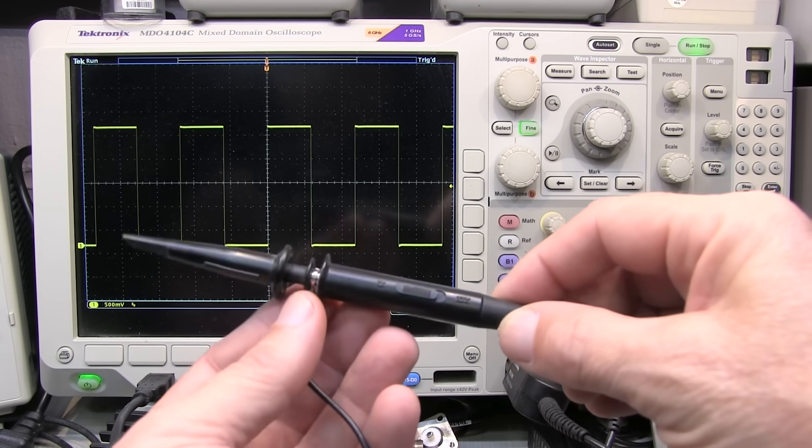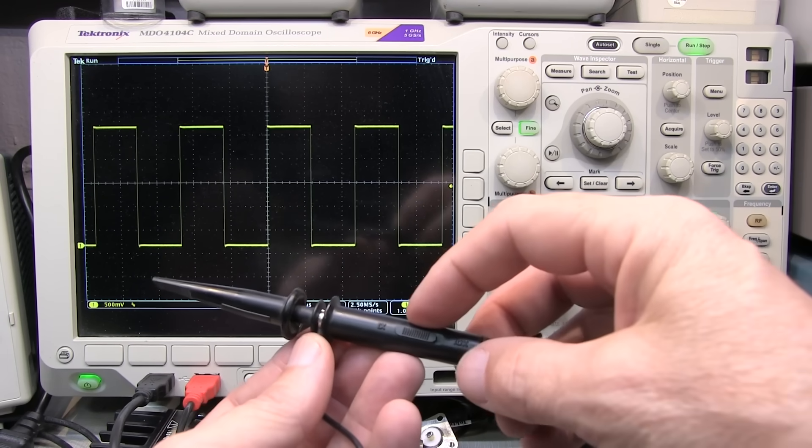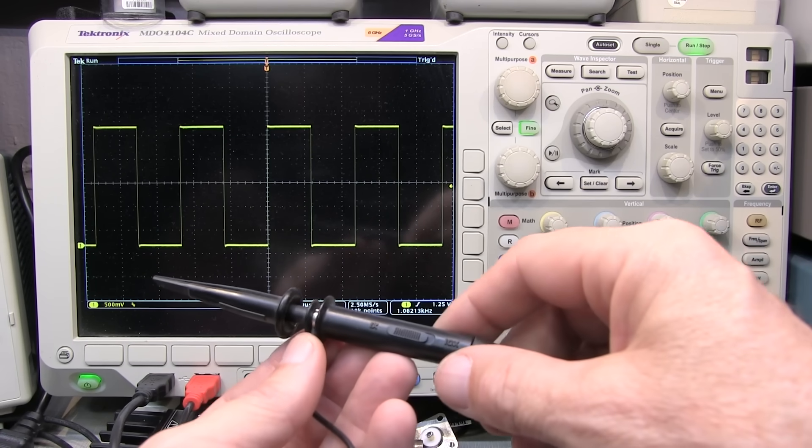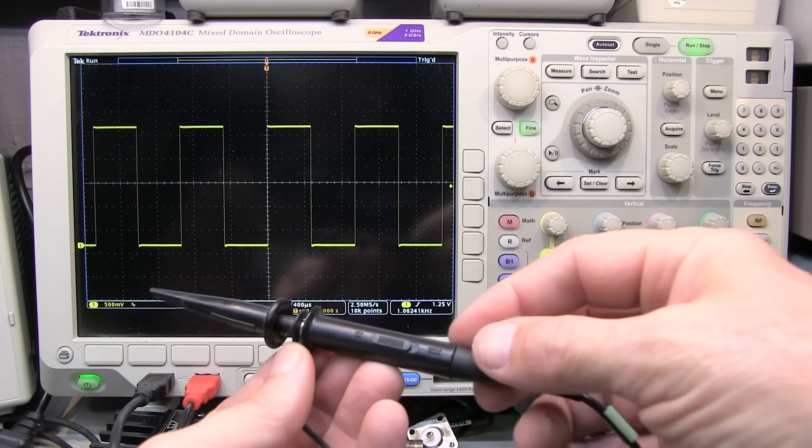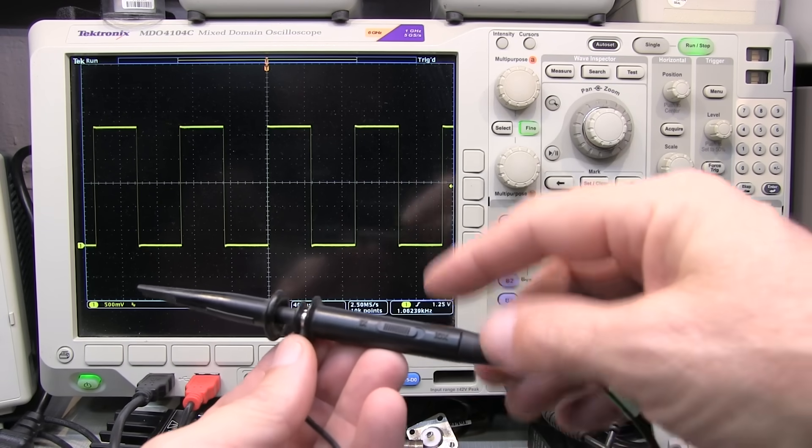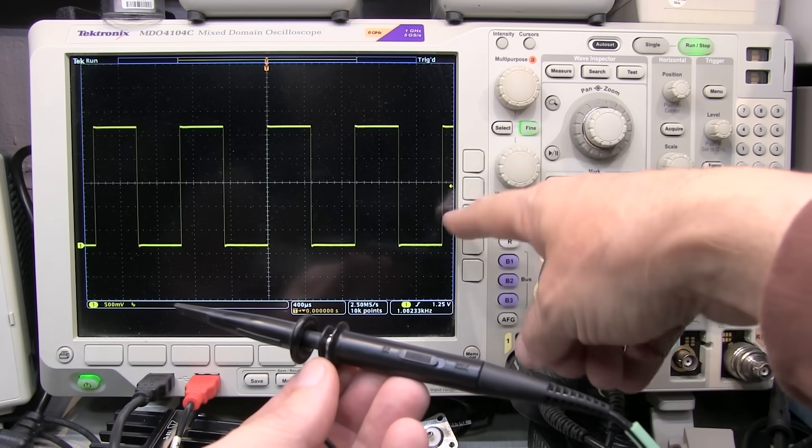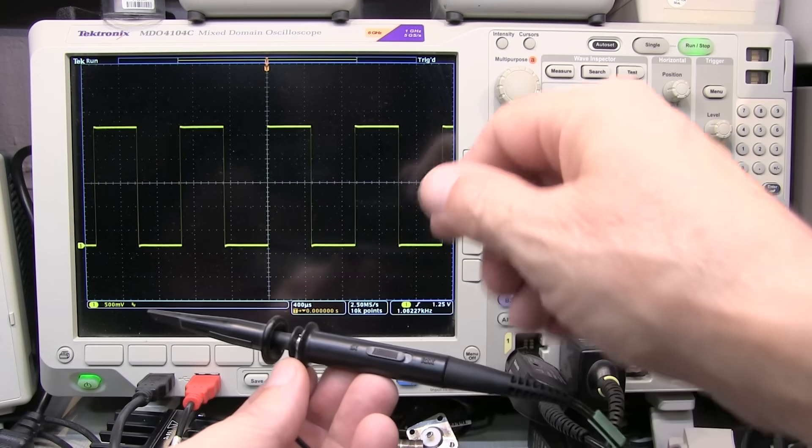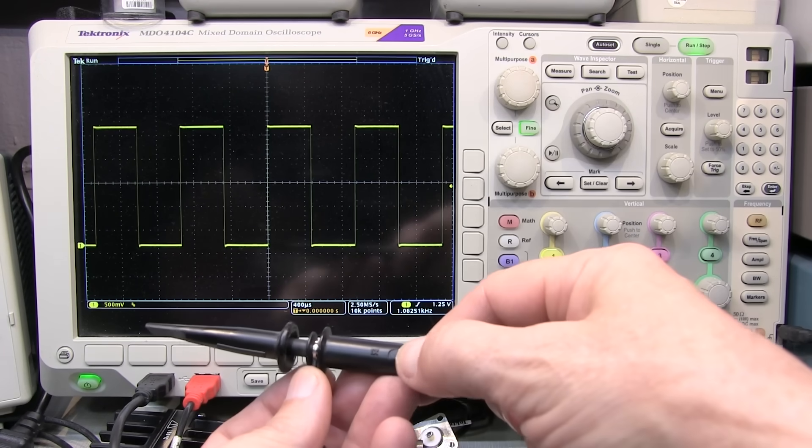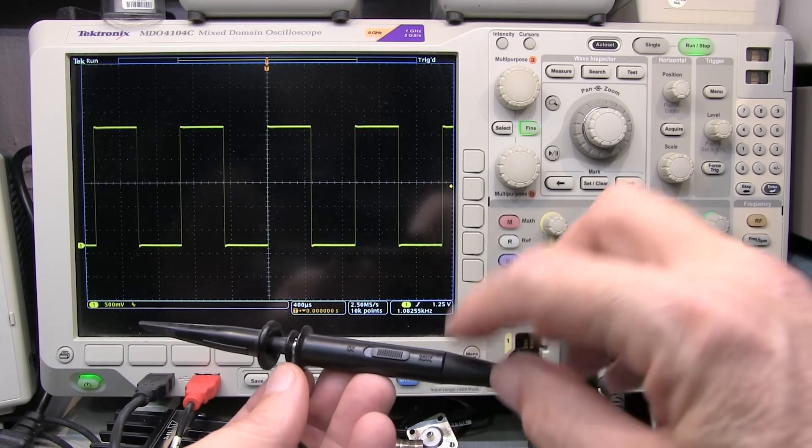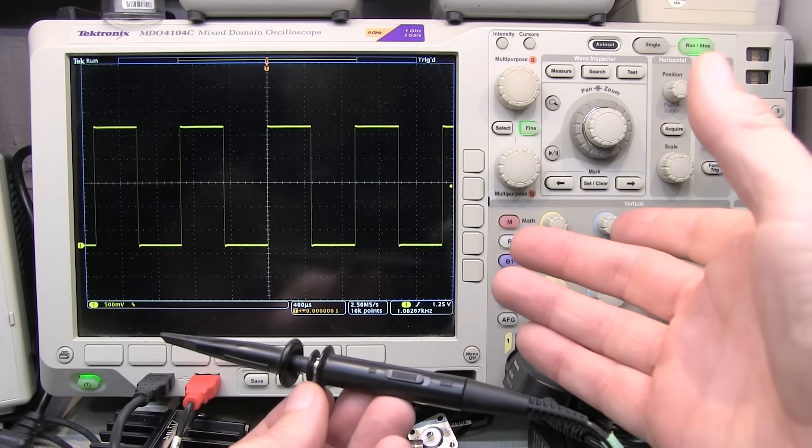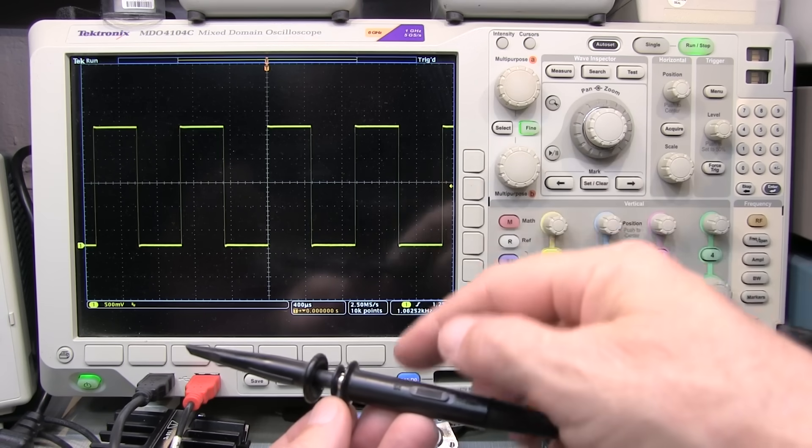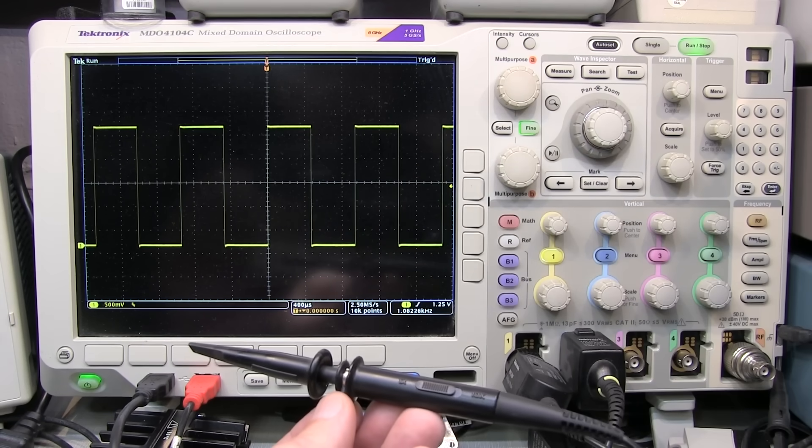Most 1x probes are in the neighborhood of 5 to 10 megahertz bandwidth max. But the advantage is that they will not reduce the amplitude of their signal by a factor of 10. And you can get effectively nearly a 10 to 1 improvement in signal to noise ratio for low level signals. So it's really important to choose whether a 10x probe or a 1x probe or maybe something like a 2x probe or a 100x probe is appropriate, depending on the voltage level and frequency range of the signals you're looking at.